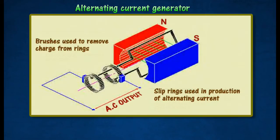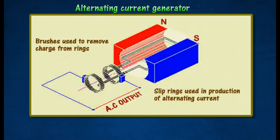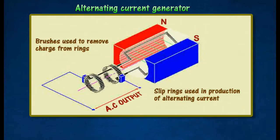Alternating Current Generator. A simple alternating current generator consists of a rectangular coil of many turns mounted on an axle between the poles of a permanent magnet.